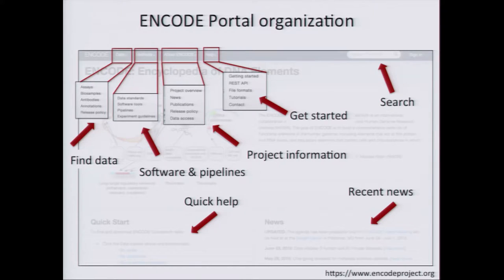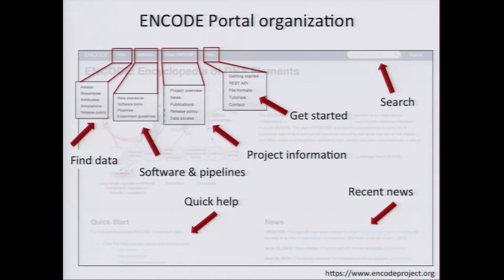Starting with the ENCODE portal organization: the menu bar is broken into Data, where you can find the core of the ENCODE portal and all consortium-generated data; Methods, which has software and pipelines; About ENCODE for general project information; and Help documentation. There is a quick search box, a section with recent news and updates, and a quick help section in the corner with easy links for browsing data, search examples, or ENCODE annotations.